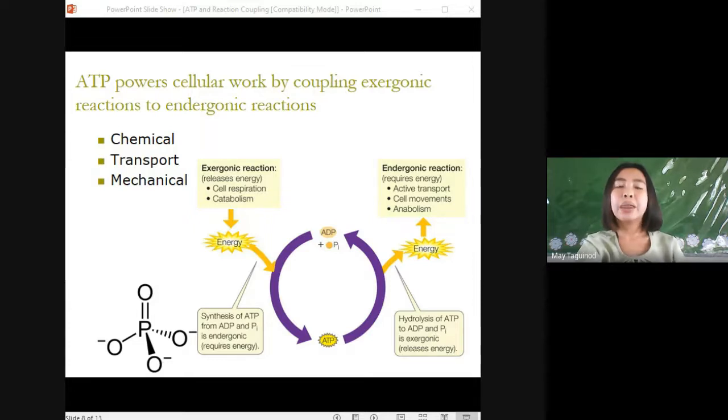So a cell does three main kinds of work. We have chemical, transport, and mechanical.